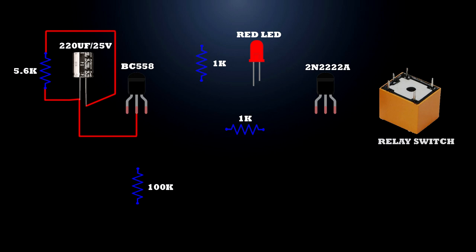BC558 transistor second pin connects to the 100 kilohm resistor first terminal. Input 12 volt supply. BC550A transistor third pin connects to the 220 microfarad capacitor positive pin. BC558 transistor first pin connects to one kilohm resistor first terminal.